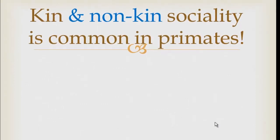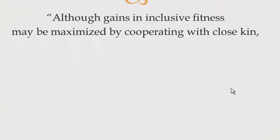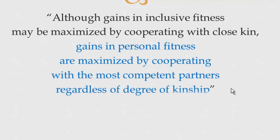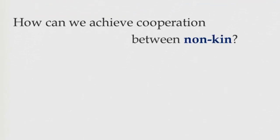Studies of primate societies over the last couple of decades have observed both kin sociality and non-kin sociality in primates, and indeed we see this in humans as well. A recent collection on primate kinship concluded that although gains in inclusive fitness may be maximized by cooperating with close kin, gains in personal direct fitness are maximized by cooperating with the most competent partners regardless of degree of relatedness. This is because the payoff in direct fitness is proportionally so much greater. Looking at these limits, we should predict that human societies will be a mix of kin and non-kin, raising the question of how cooperation and even altruism between non-kin can be achieved.